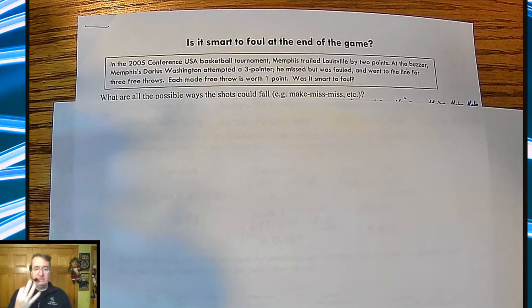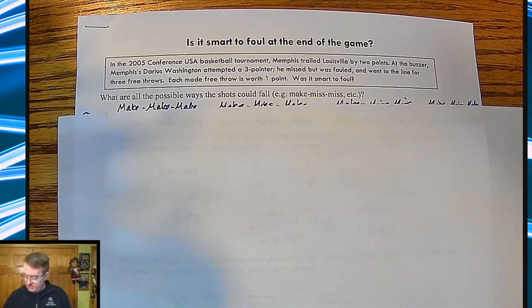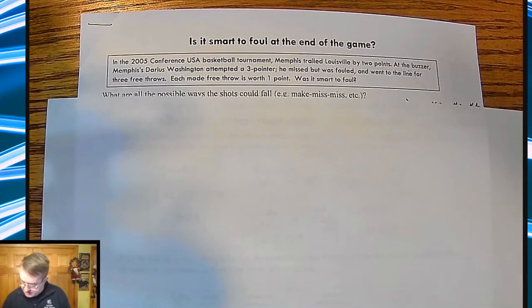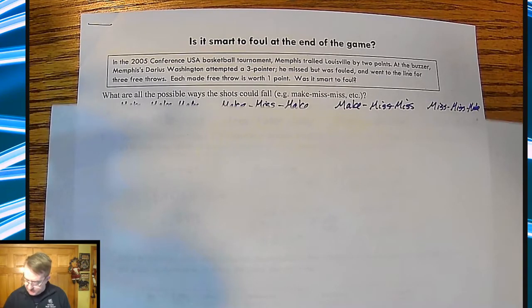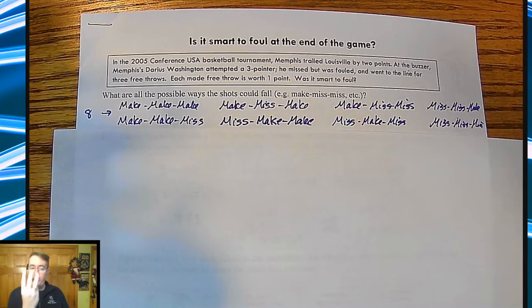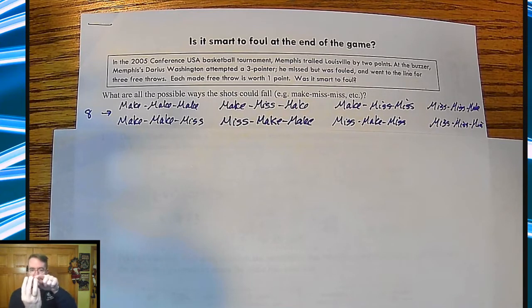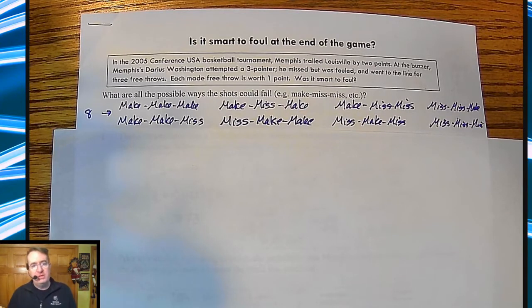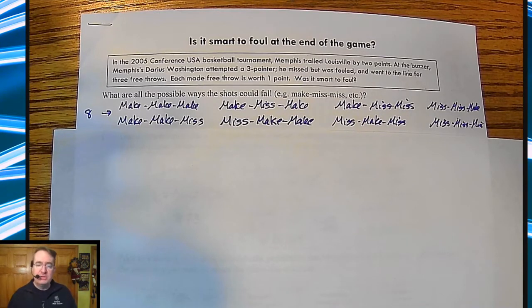He has three shots. There are eight possible outcomes, because we've got three different shots — two choices for the first, two choices for the second, two choices for the third. Two times two times two is eight. Either the ball goes in or it comes out — he makes it or he misses it. None of this 'it sits on the rim' stuff.